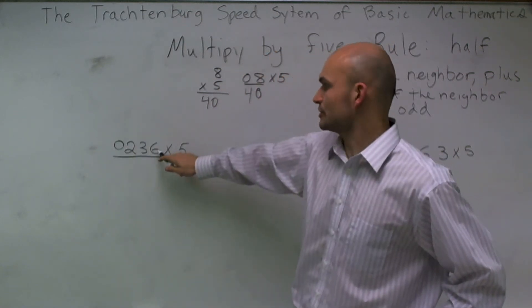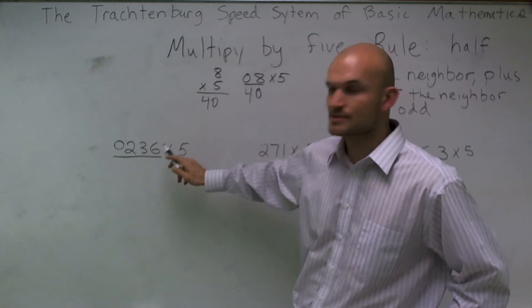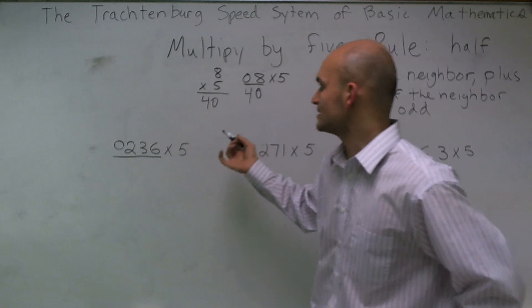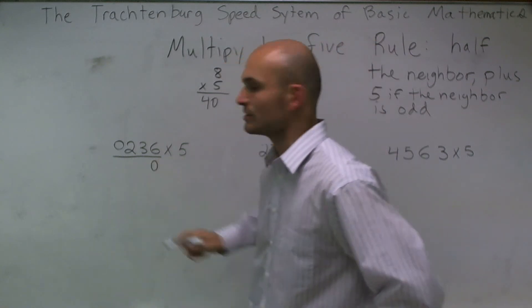So remember, first thing we need to do is we need to take whatever our neighbor is. So I see that this is 6. It's even. So the number to the right is going to be, or my neighbor, is 0.